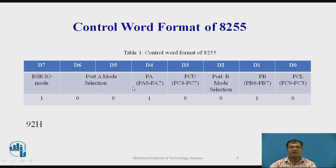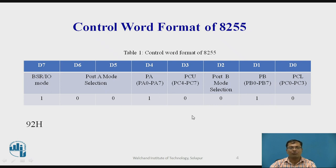Hence the final control word value is 92H (binary: 1, 0, 0, 1, 0, 0, 1, 0). This 92H configures Port A and Port B as input and Port C as output. This is how the control word format works.